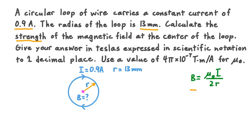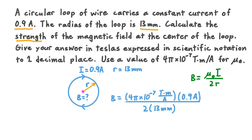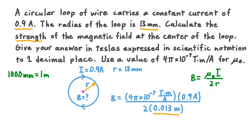To solve for it, we recall that the magnetic field strength at the center of a current-carrying circular loop equals mu-naught times I divided by 2 times the loop's radius. Since we're given mu-naught, I, and R, we're ready to substitute in. Before calculating, though, we need to convert the radius from millimeters into meters to match the SI base units. Since 1,000 millimeters equals 1 meter, 13 millimeters equals 0.013 meters — we move the decimal point three spots to the left.